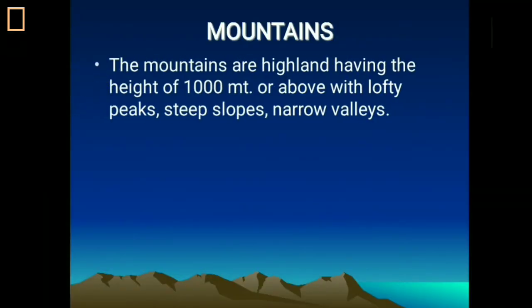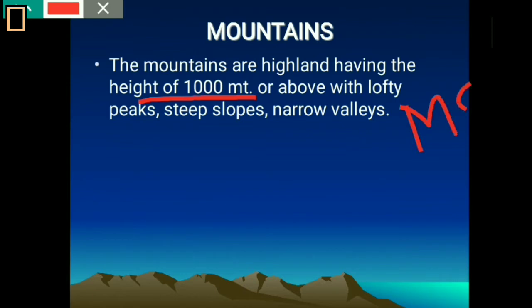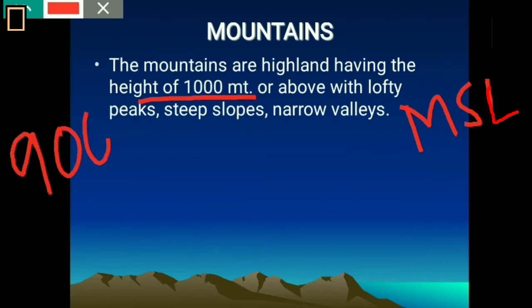Now take a look at the definitions of mountains. Mountains are the highlands with lofty peaks, steep slopes and narrow valleys. The most important feature is the height — that means 1000 meters from the mean sea level (MSL). They also have sharp pointed mountain peaks with steep slopes and long deep narrow gorges. There is a basic difference between mountains and hills: hills have an average height of 900 meters, while mountains must be at least 1000 meters from sea level.